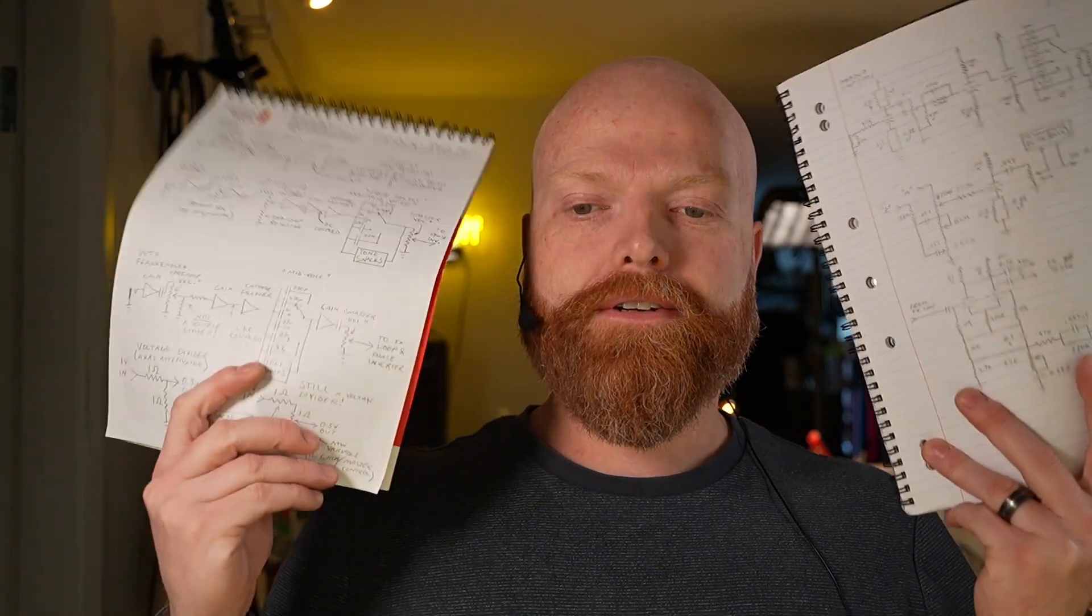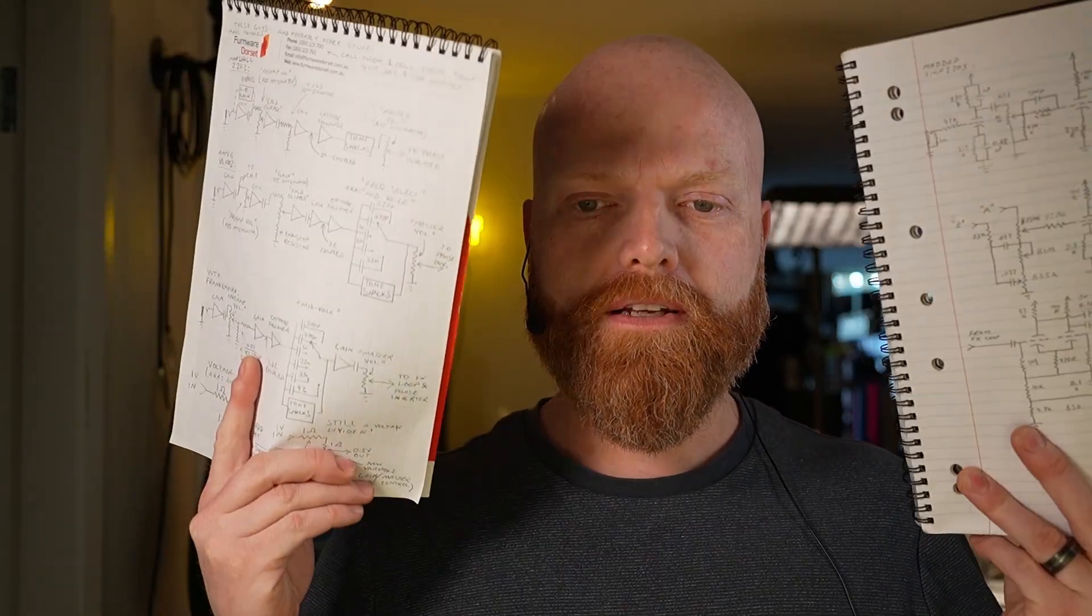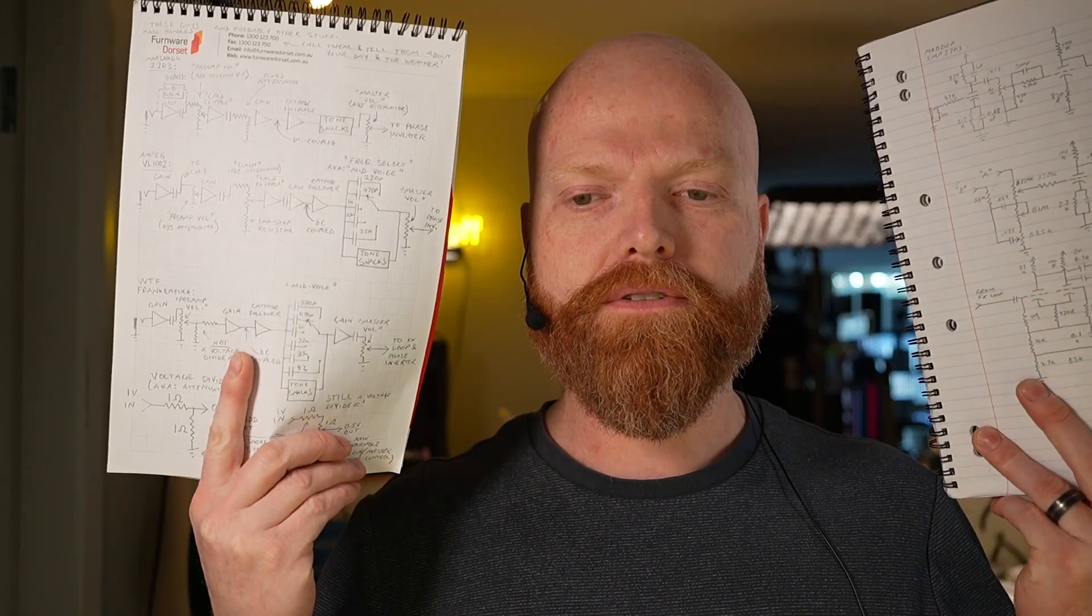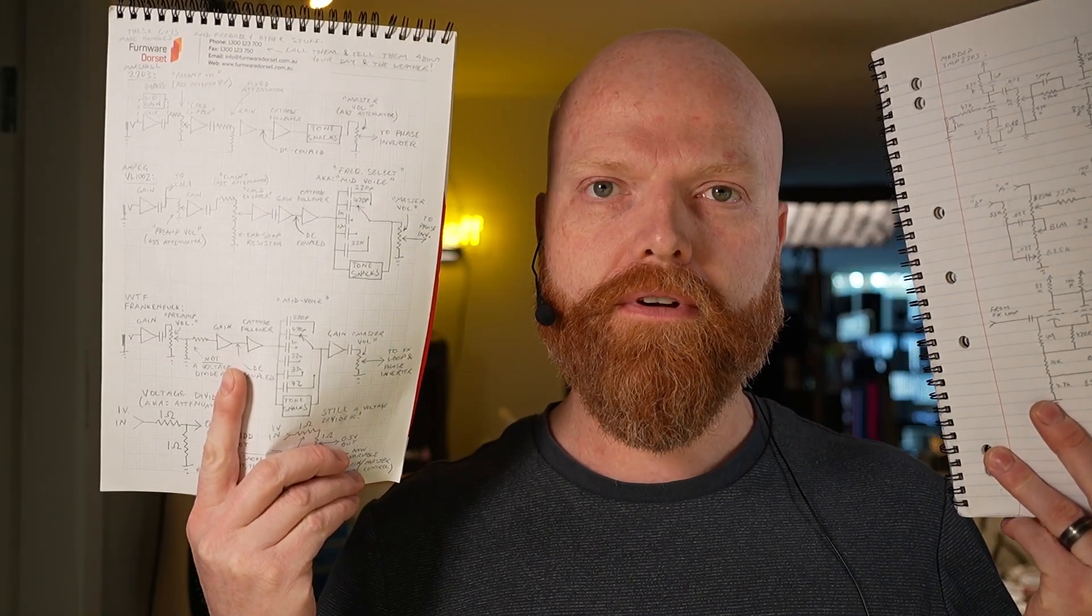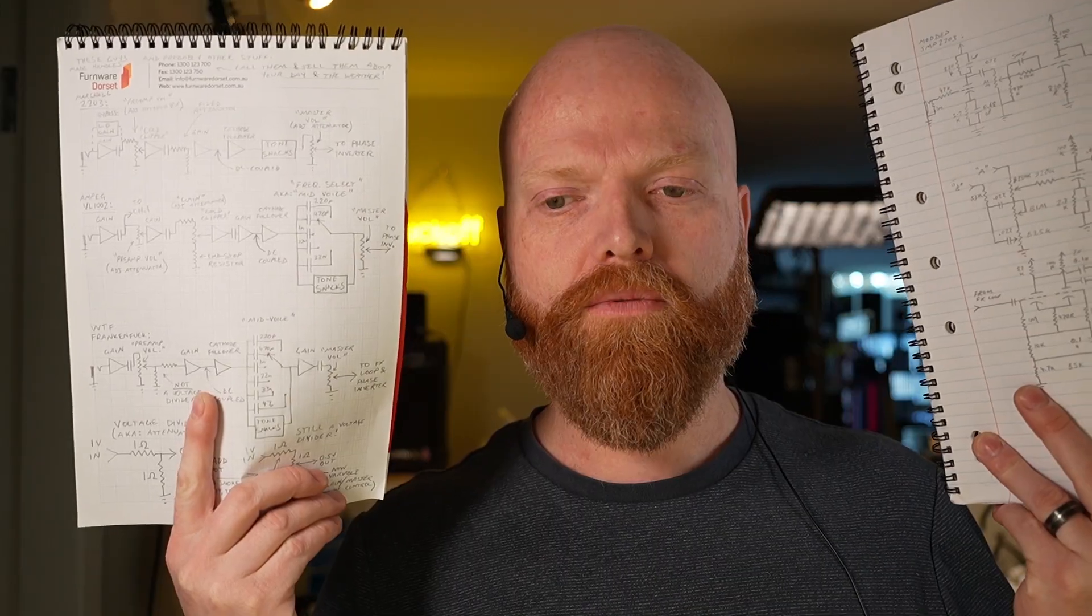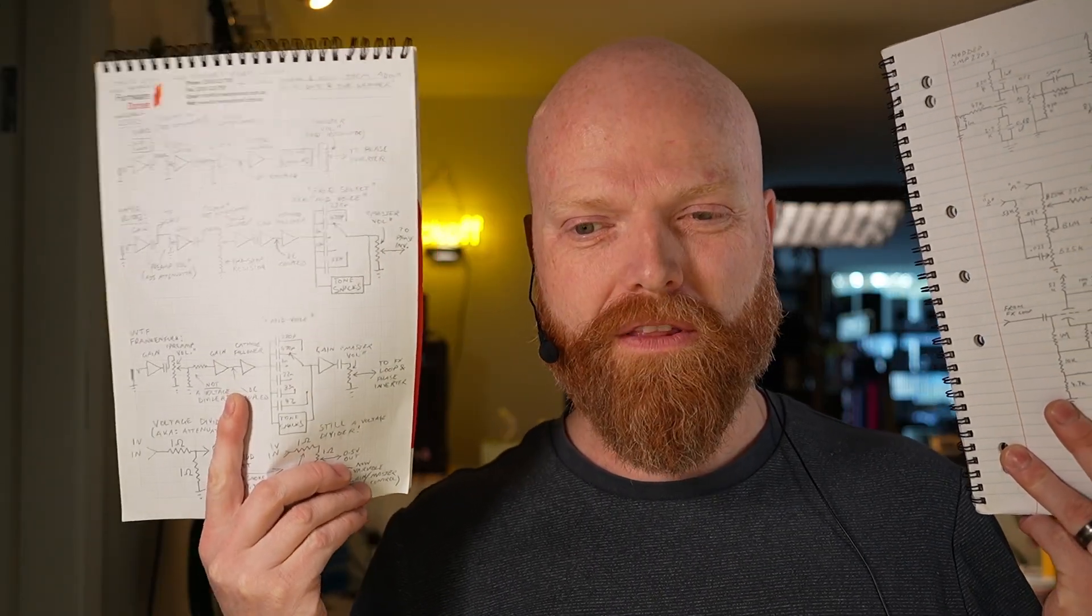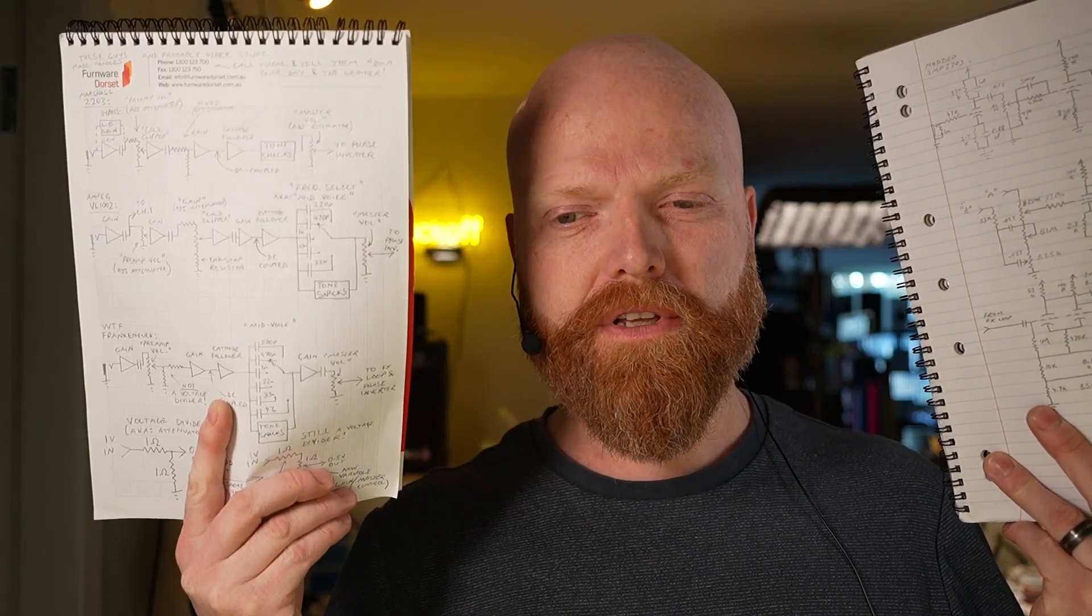All right Jim, so I did something crazy and traced this thing out, as well as did a flowchart of what a 2203 is, what VL1002 is, which is what I think this builder was leaning towards, thing known as the Lee Jackson mod, which is basically associated with the frequency select switch on some MPEG models, labelled in this case as the mid voice, which has now been removed, but we're just trying to figure out what the original goal may have been.